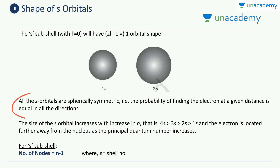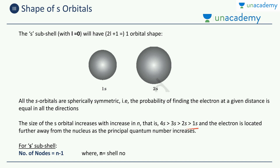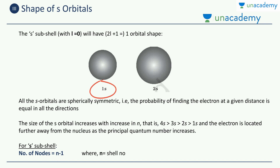All s orbitals are spherically symmetric, meaning the probability of finding the electron at a given distance is equal in all directions. The size of the s orbital increases with increase in n — 1s is the smallest and 4s is the biggest. As n increases, the electron is located further away from the nucleus. The nucleus is at the center of the sphere. The number of nodes is n minus 1.